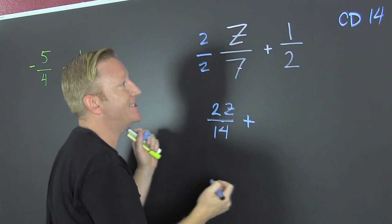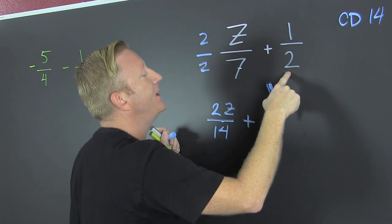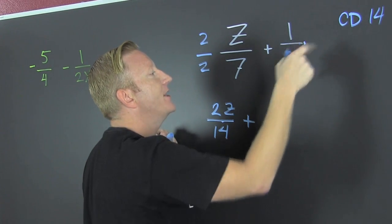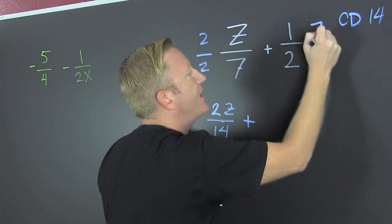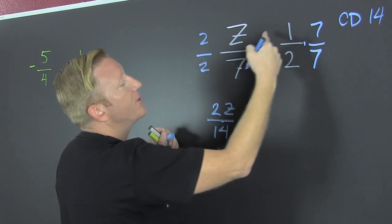And then, I'm going to add that to, wait for it, times, what do I multiply 2 by to get 14? 7 over 7. So then, I multiply fractions straight across.